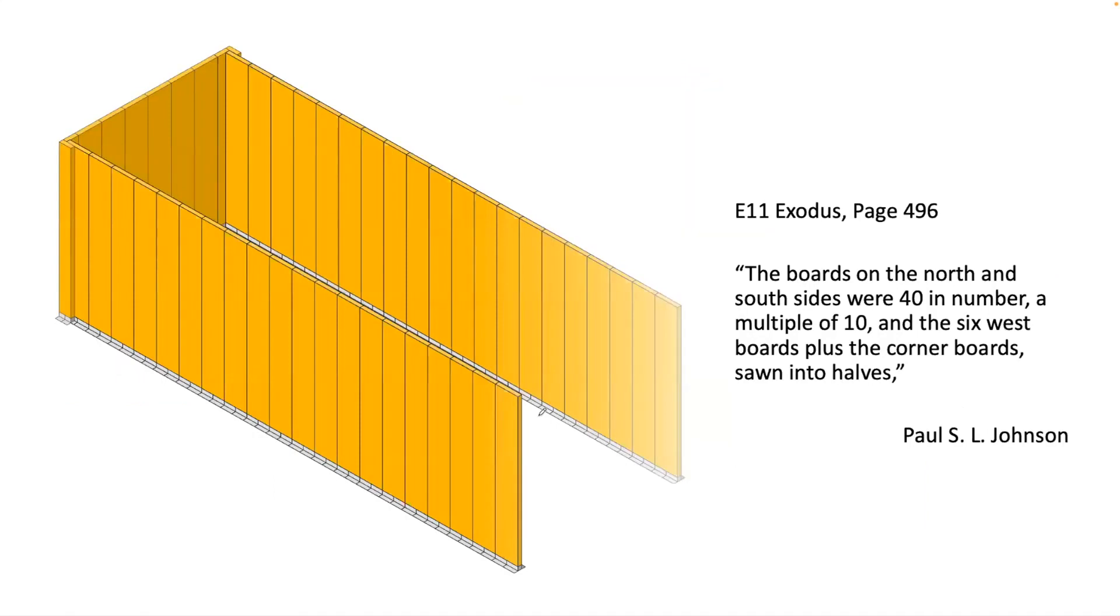In E-Volume 11, Exodus, Brother Johnson states the boards on the south and the north sides were forty in number—a multiple of ten—and the six west boards plus the corner boards sawn into halves, also totaling forty, a multiple of ten.